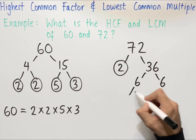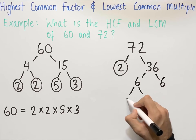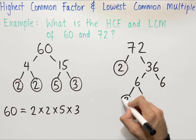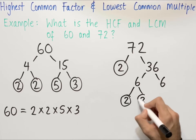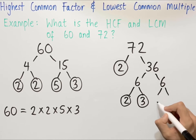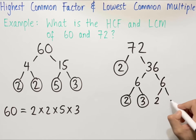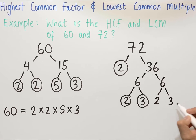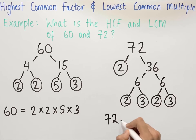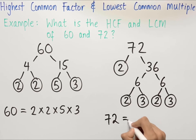Two numbers that multiply to make 6 are 2 and 3 — both prime, so we circle them. Similarly, for the other 6, we have 2 multiplied by 3, which gives 6, and both of these are prime, so we circle them. So 72 can be written as the product of its prime factors.